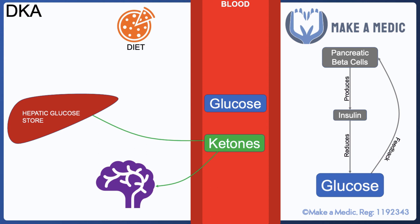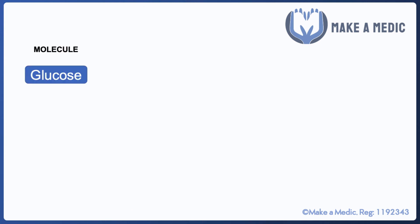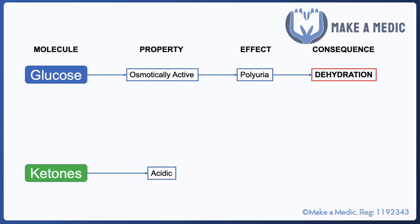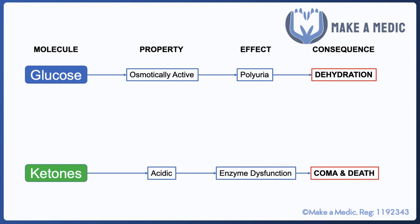The term diabetic ketoacidosis summarizes exactly what's going on — 'diabetic' meaning high glucose, 'ketoacidosis' meaning high ketones. The problem with high glucose is that it is osmotically active: high concentrations in the blood and filtrate draw water into the urine, causing significant fluid loss and dehydration. The problem with ketones is that they are acidic — keto acids — creating a state of metabolic acidosis, which affects enzyme function across the body and in severe instances can result in coma and even death.